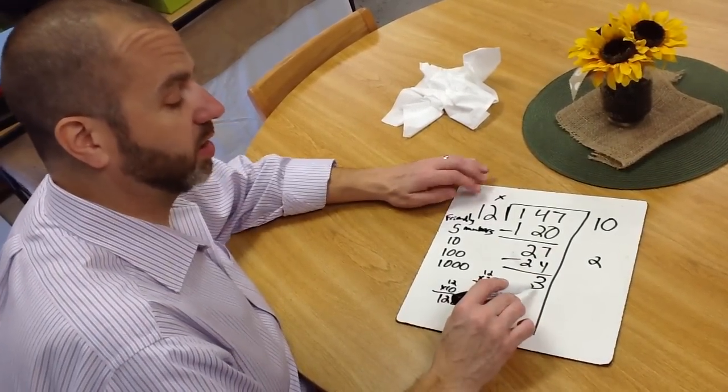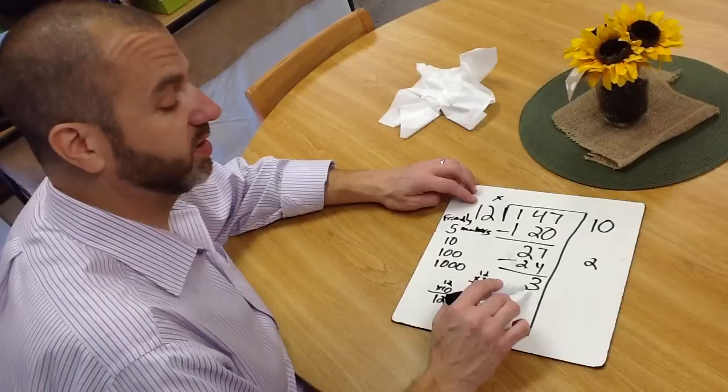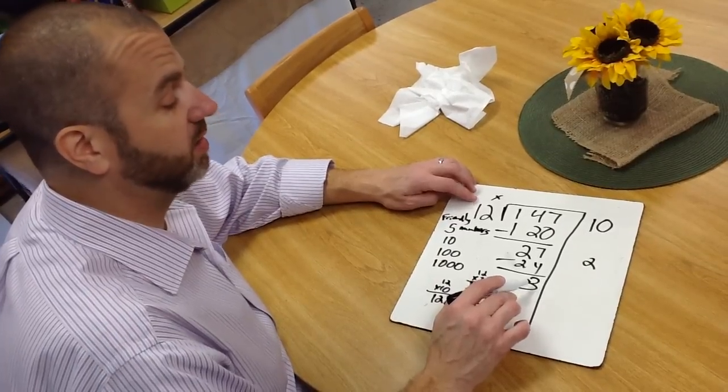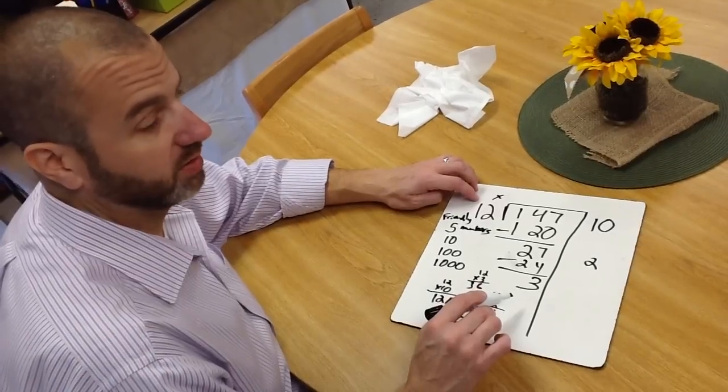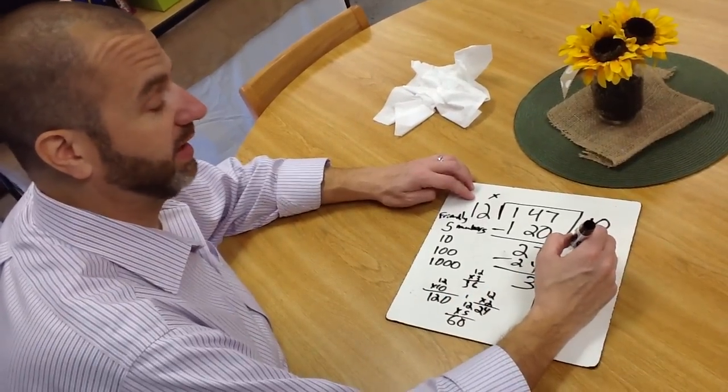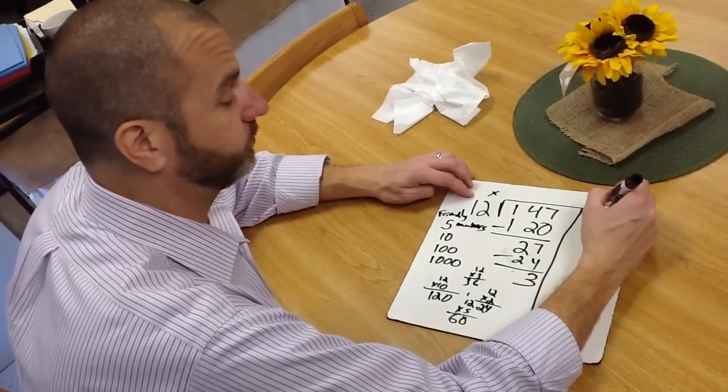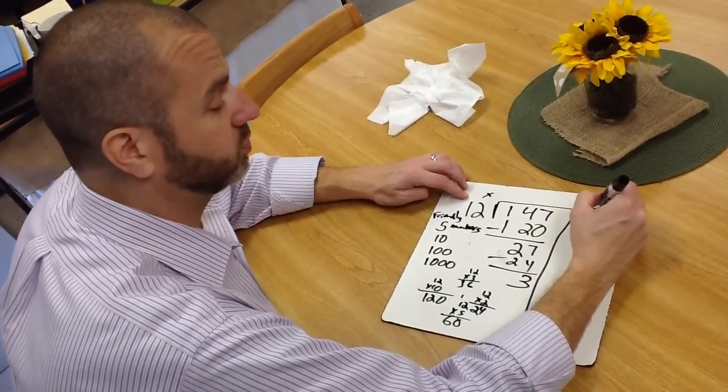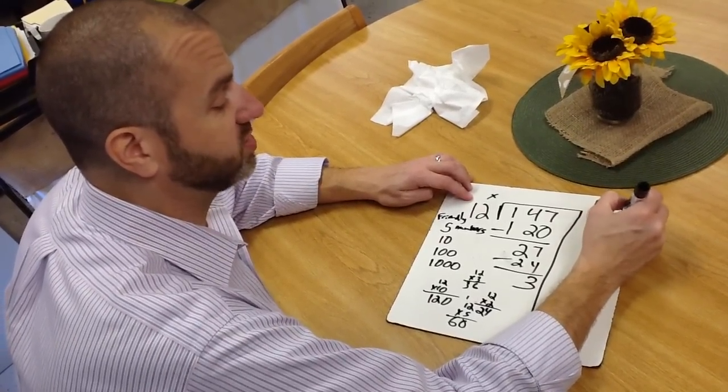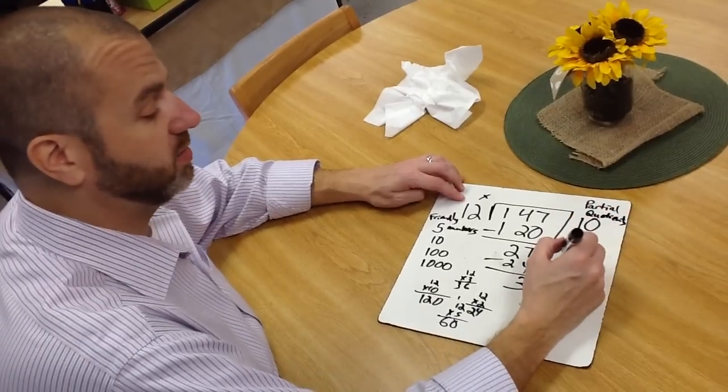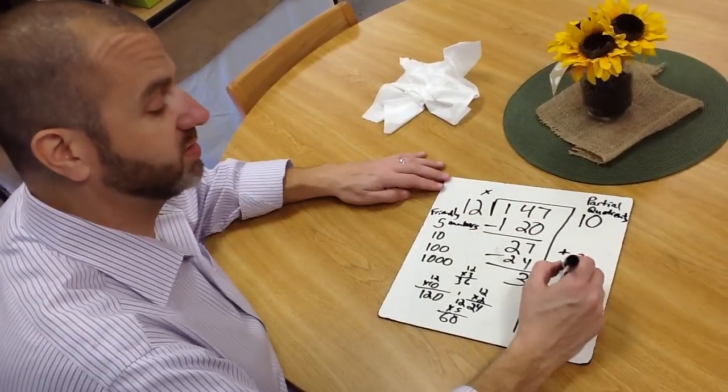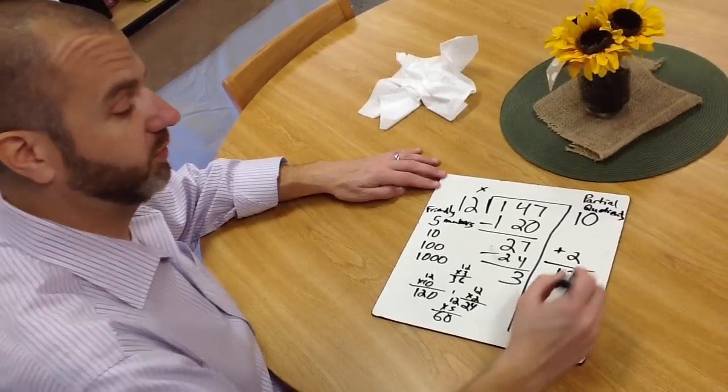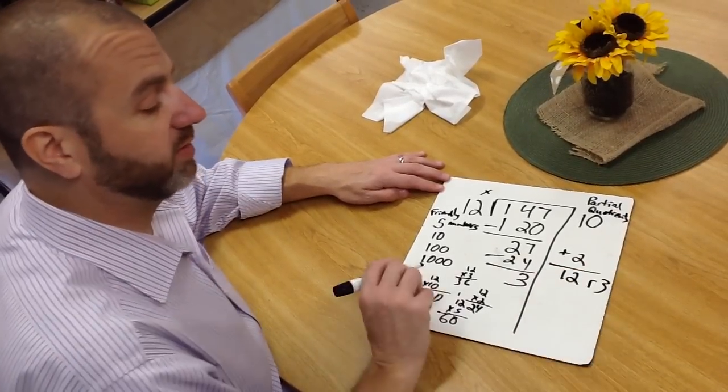And now we ask ourselves, can our remainder be 3? And again, what we're teaching our kids is yes, because we cannot put any more into groups of 12 evenly. So what we would do is we would take what we call partial quotients, which is the answer to a division problem, of 10 plus 2, and if you have 1 ten and 2 ones, that gives us 12 with 3 left over.